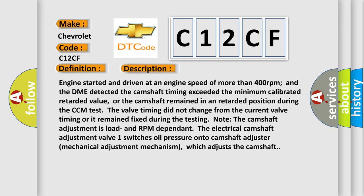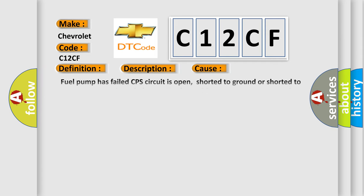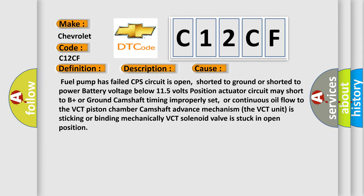This diagnostic error occurs most often in these cases: fuel pump has failed; CPS circuit is open, shorted to ground, or shorted to power; battery voltage below 11.5 volts; position actuator circuit may short to B+ or ground; camshaft timing improperly set; continuous oil flow to the VCT piston chamber camshaft advance mechanism; the VCT unit is sticking or binding mechanically; or the VCT solenoid valve is stuck in the open position.